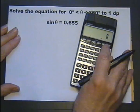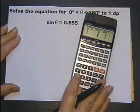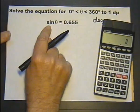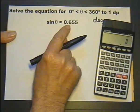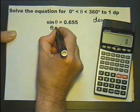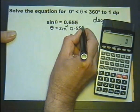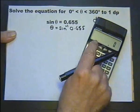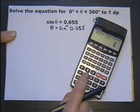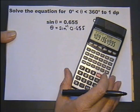Let's have a look at that, there's a little D down there, but you can always check by pressing the mode button and make sure it's in degree mode. So sine theta is 0.655, then theta itself will be the inverse sine of 0.655. Inverse sine 0.655, and to one decimal place that's 40.9 degrees.